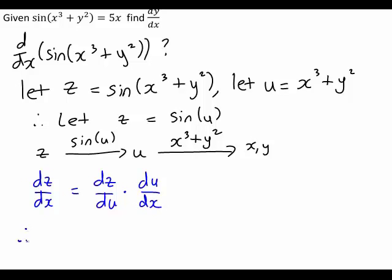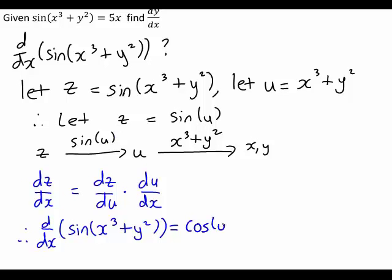So dz/dx, the derivative with respect to x of sin(x³ + y²), equals dz/du. Differentiating sin(u) with respect to u gives cos(u), multiplied by du/dx. Now u is x³ + y², so differentiating that with respect to x: the derivative of x³ is 3x², and by linearity it becomes 3x² plus the derivative of y² with respect to x.